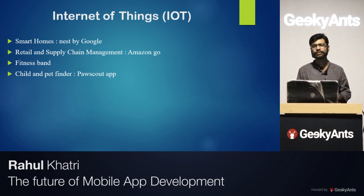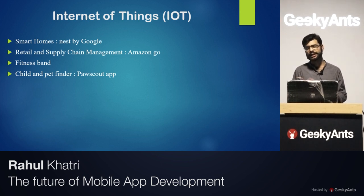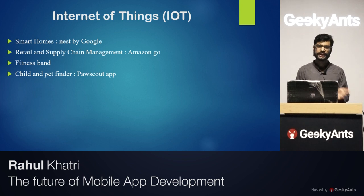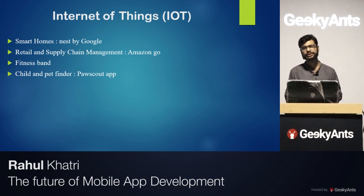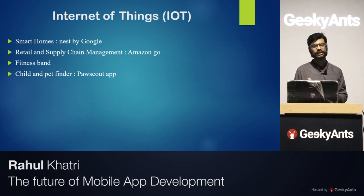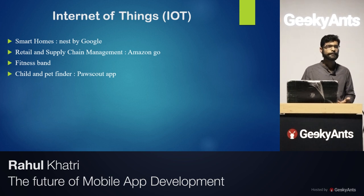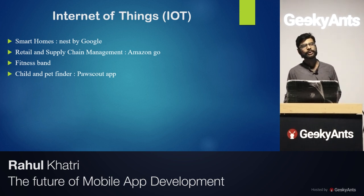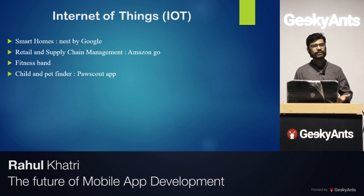Nest helps not only with setting temperatures in summer but also room heaters and other things in winter. Another IoT example is retail supply chain management. Amazon Go uses apps and other platforms to track materials, stock grocery items, and monitor which products are running low or not needed, helping maintain product quantities.